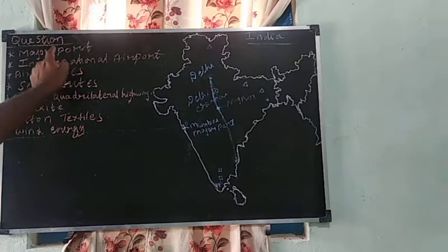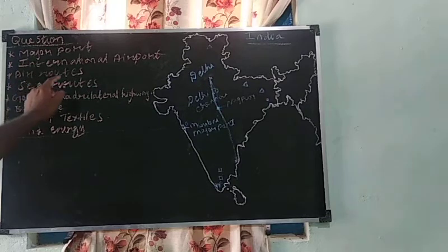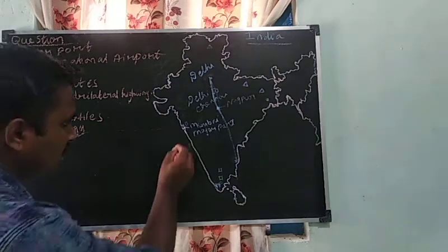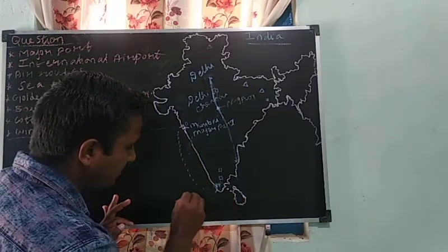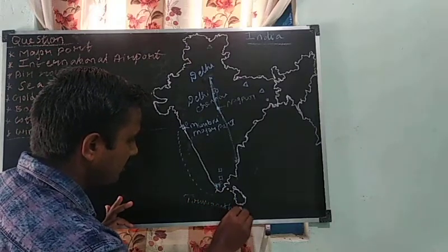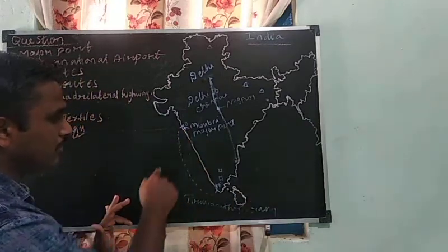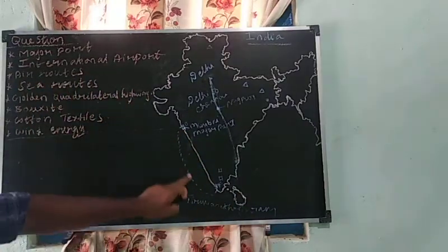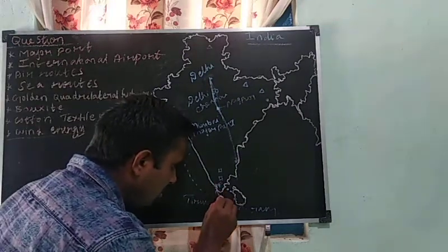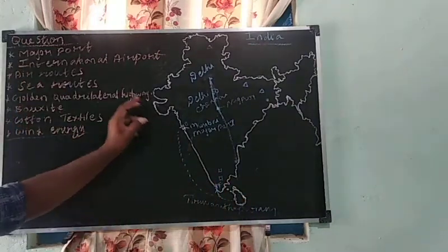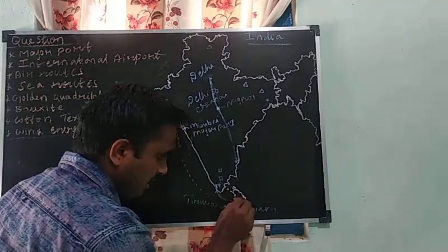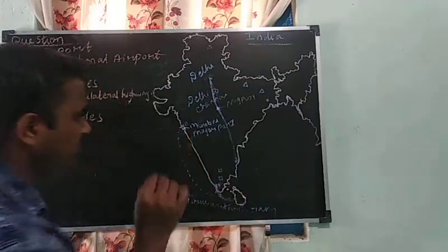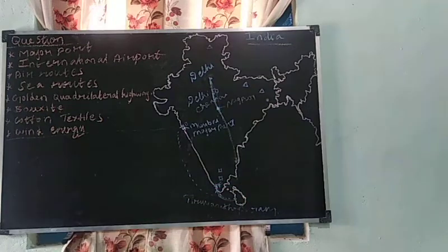Next one is sea route. It is connecting Mumbai to Thiruvananthapuram, and from Thiruvananthapuram to Colombo, the capital of Sri Lanka. If they ask for the places, for example Mumbai to Thiruvananthapuram, you mark that connecting sea route.